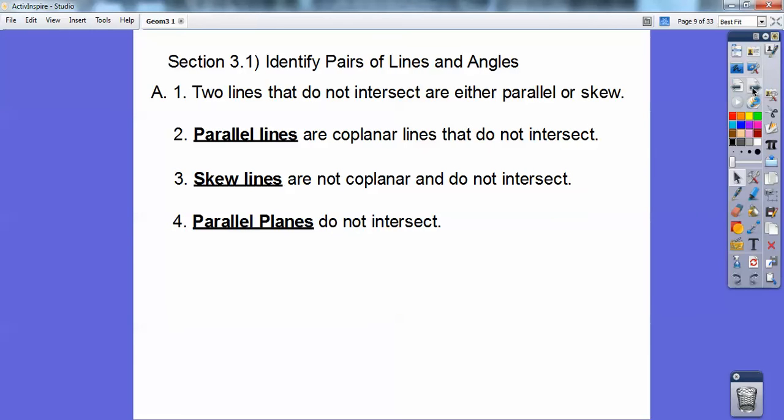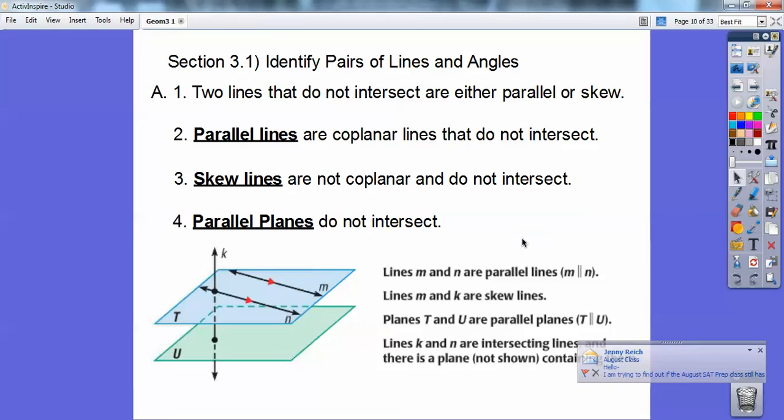Parallel planes are like your ceiling and your floor, or opposite walls, so they don't intersect. And so here's a picture right here. These lines right here are parallel because of these red arrows. And plane T is parallel to plane U because they wouldn't intersect. And can you see line K right here? It won't intersect line M, but they're not parallel. Those ones are the skew ones. They're in different planes and they wouldn't intersect.